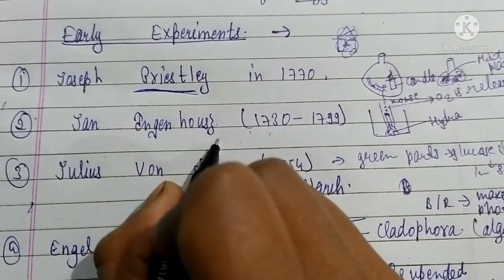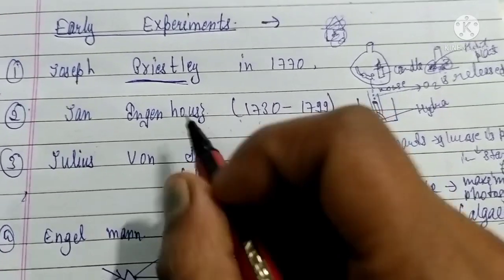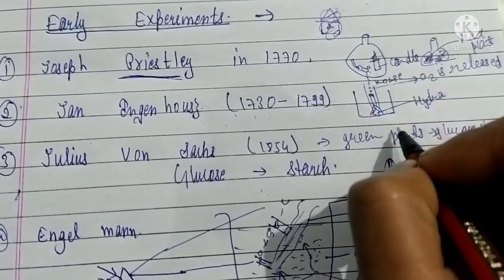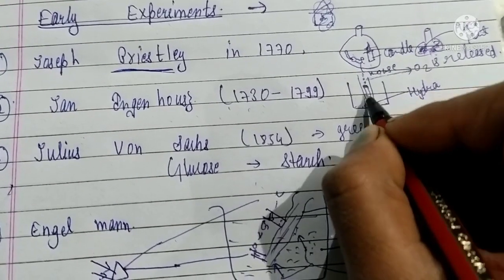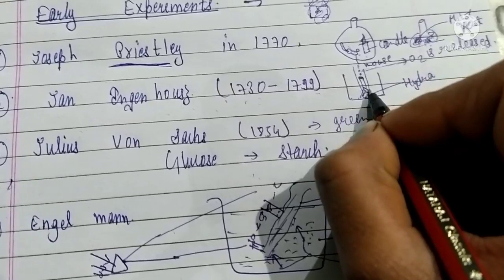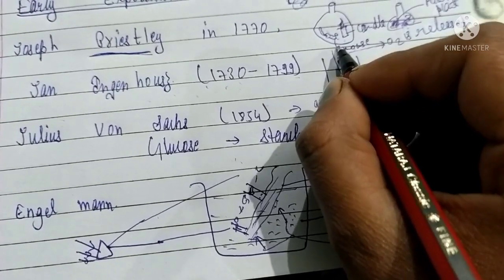Jan Ingenhousz conducted an experiment from 1730 to 1799, in which he took a beaker, a hydra plant, placed it under an inverted funnel, then attached a tube on top. After some time, he observed bubbles coming out.